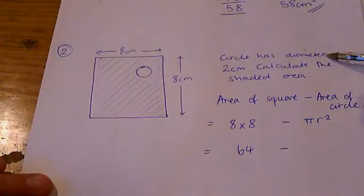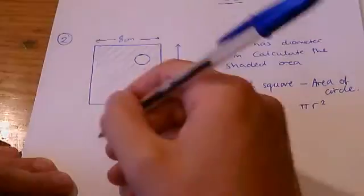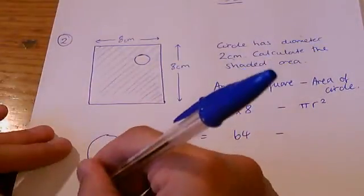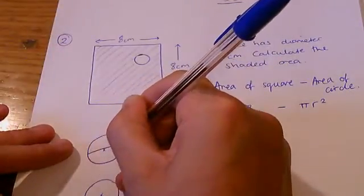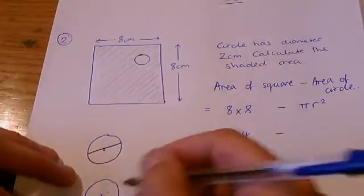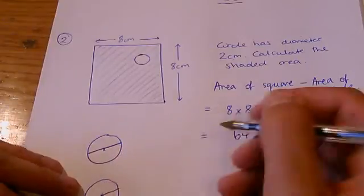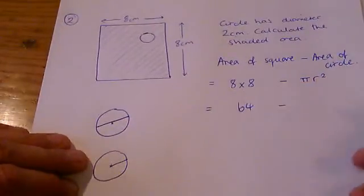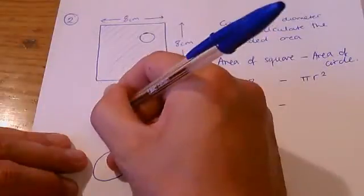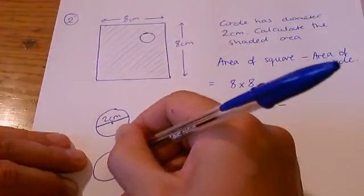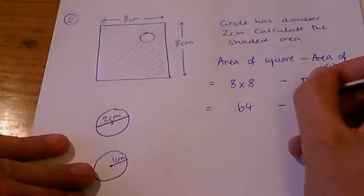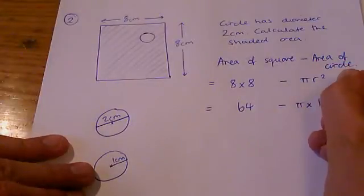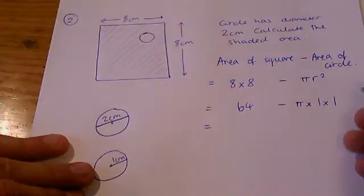If you remember the relationship between the radius and the diameter: the diameter goes all the way across the circle through the center; the radius just goes halfway across the circle from the center. So you were told that this was 2 centimeters; you need to use 1 centimeter for the radius. So this is π times 1 times 1, that's 1 squared.